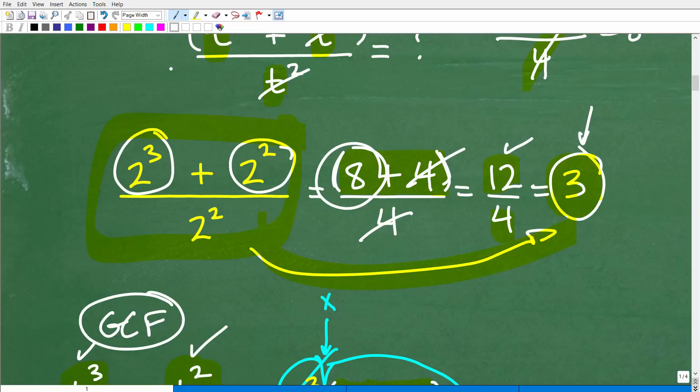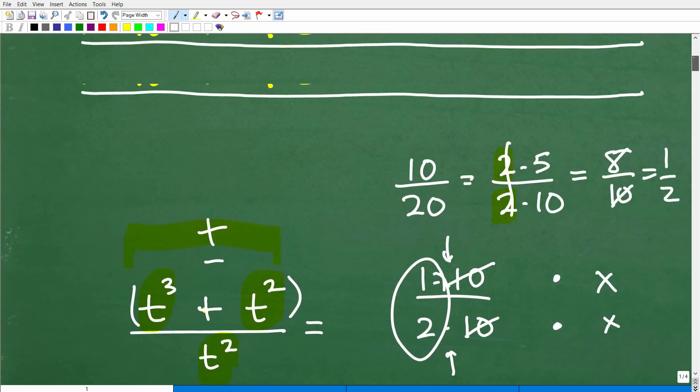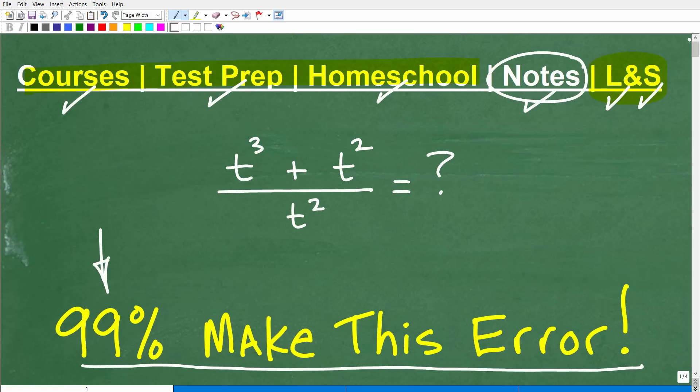So, again, when it comes to algebra or mathematics, a lot of these rules that you learn in basic arithmetic carry through algebra. Sometimes, students, it's kind of funny, they tend to do pretty well, let's say, in arithmetic. But when they get to algebra, they start making this mistake where when they were back in the 5th grade or 6th grade, they were doing very well. And why is that?